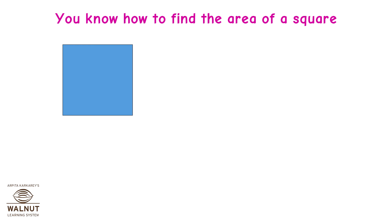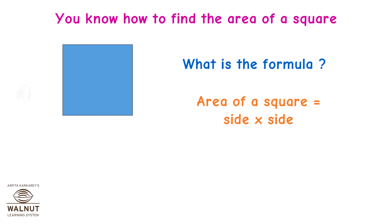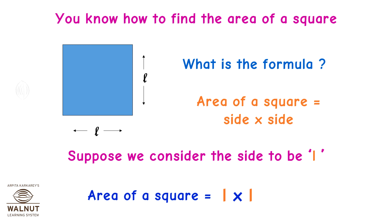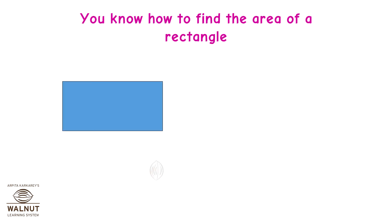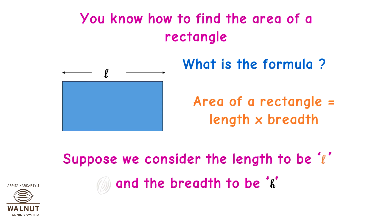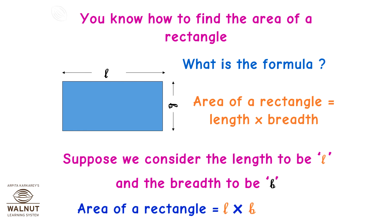You know how to find the area of a square. The formula is: area of a square is equal to side into side. Suppose we consider the side to be L, so area of a square is equal to L into L. You know how to find the area of a rectangle. Area of a rectangle is equal to length into breadth. Suppose we consider the length to be L and the breadth to be B. Therefore, area of a rectangle is equal to L into B.